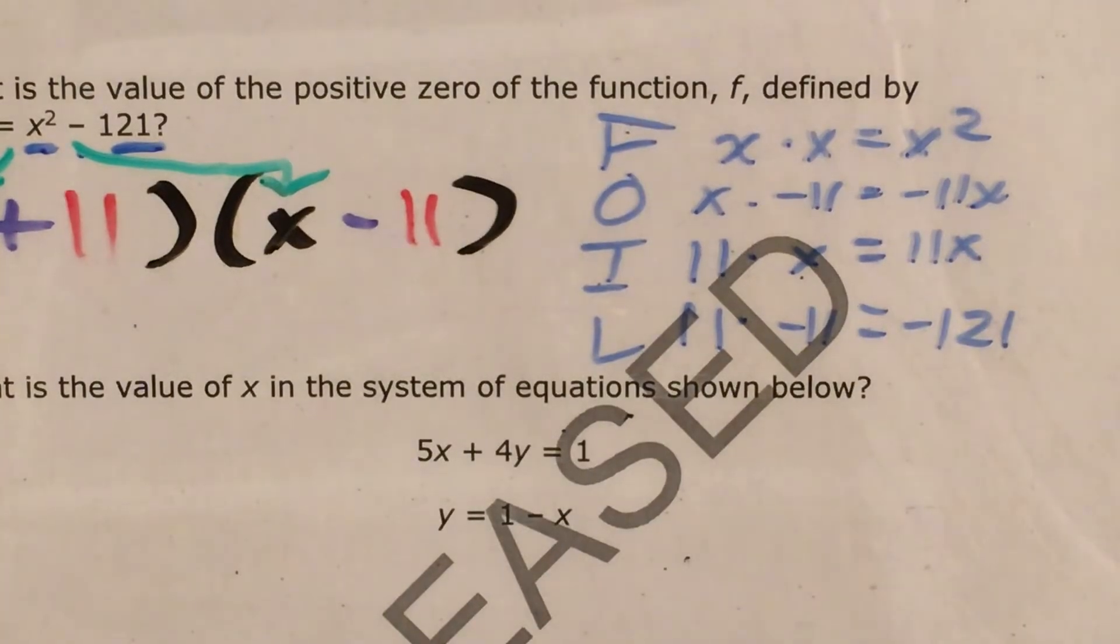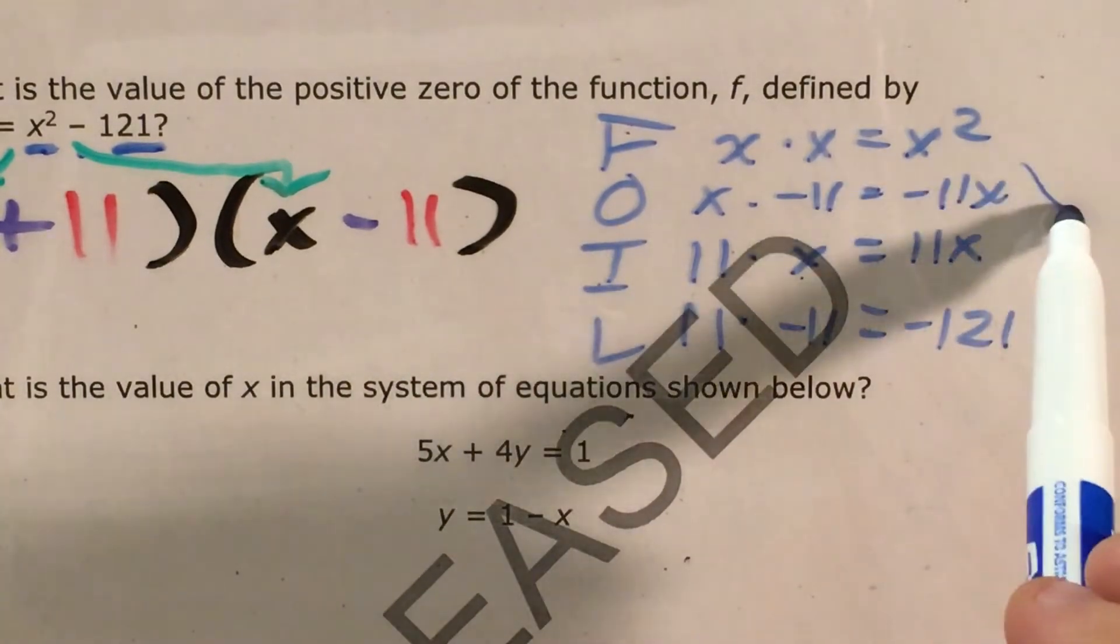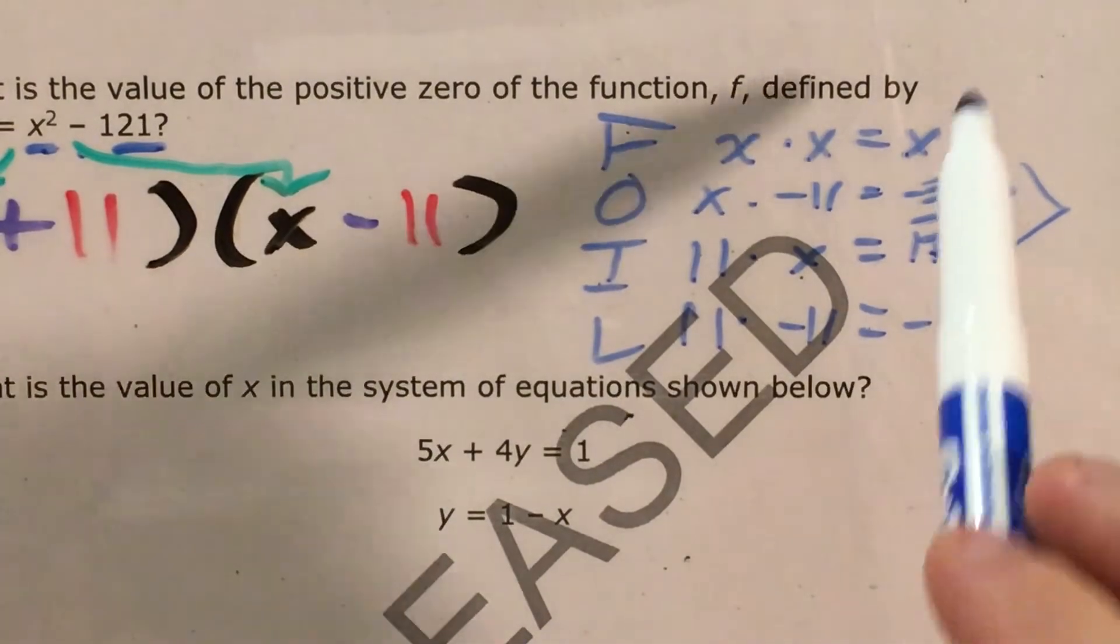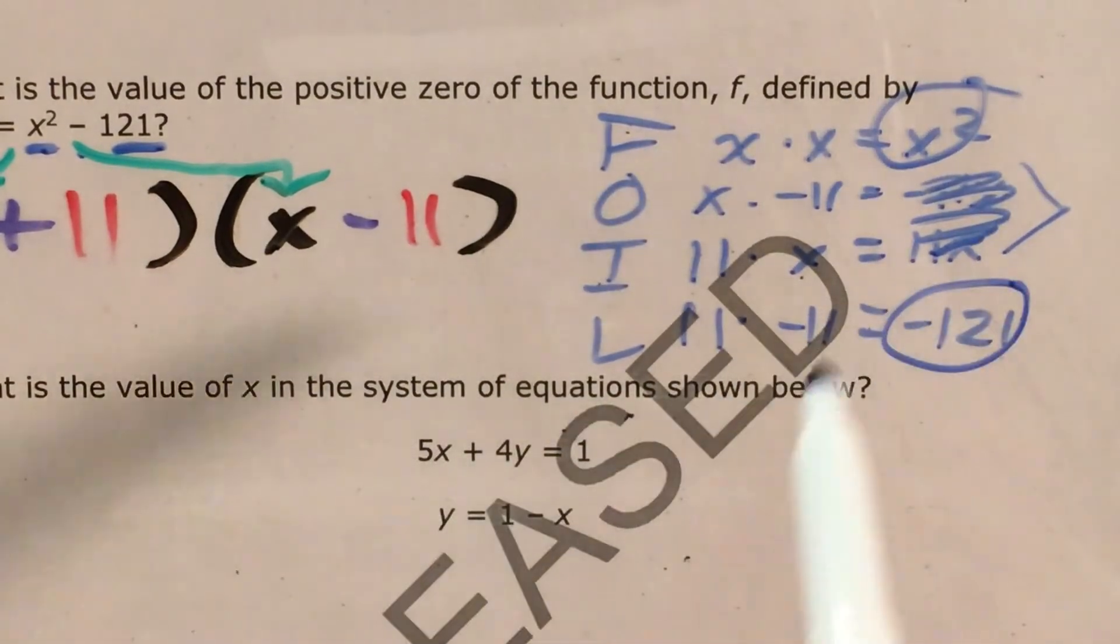Now whenever I see all of this, sorry that that was off screen for a little bit, the only thing I have left to do is combine these two as like terms, but they actually cancel each other out, leaving me with x squared minus 121.